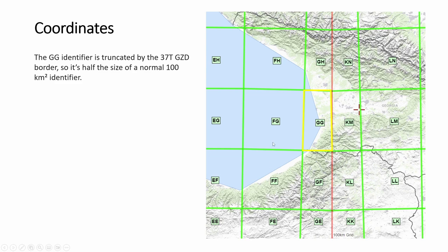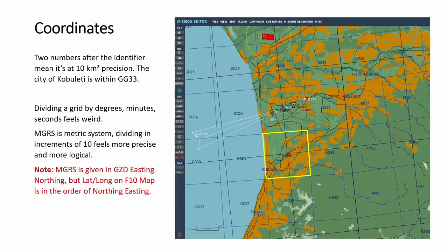Zooming in further, we look at the 100km grid identifier — for example GG-KM. This one splits in half and continues to split down. Within GG, subdivided many times, you have coordinates like 23, 24, 25 across, and 23, 33, 43 up. So a particular point might be GG 33.